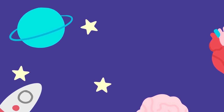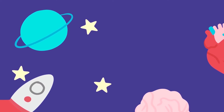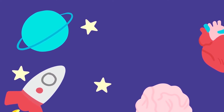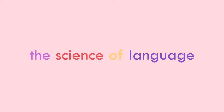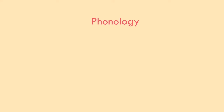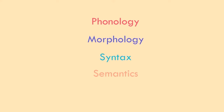Similar to how astronomy is the science of space and anatomy is the science of the body, linguistics is the science of language. This video will cover the five main parts of linguistics: phonology, morphology, syntax, semantics, and pragmatics.